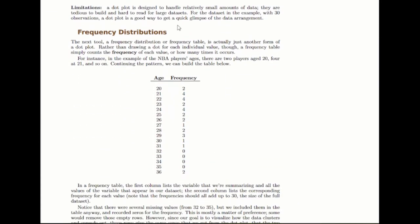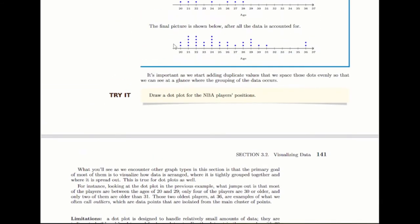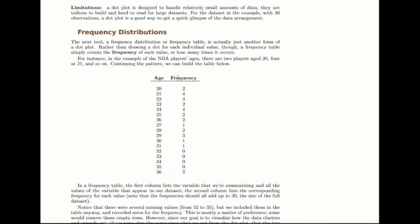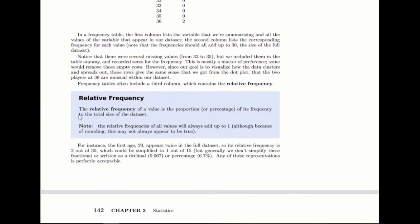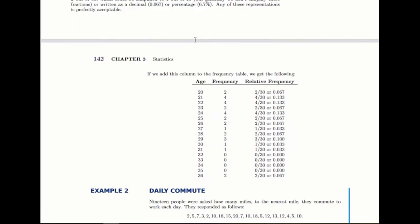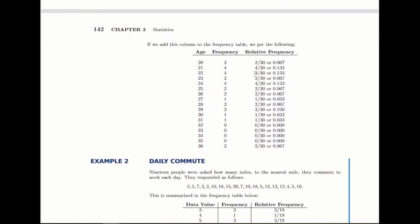Then you have a frequency distribution, which is basically the same idea, and all you're doing is counting how many dots you would put at each location. There were two players with the age of 20, so there were two dots there, and you would write down the frequency of two. You write this in a table with one column being your variable, and the other being the frequencies. You can also add a column for relative frequency, which is basically just the proportion or percentage of the total. If there are 30 total players and two are 20 years old, that relative frequency would be 2 out of 30, or 2 divided by 30.